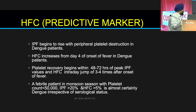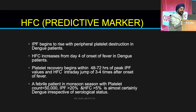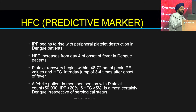A febrile patient in the monsoon season with a platelet count less than 50,000, IPF more than 20%, and HFC more than 5% is almost certainly dengue — even irrespective of serological status. This is important because there is a serological blind window: NS1 is 95% positive only for the first 4 days, sensitivity drops to 65% on day 5 and 35% on day 6, while antibodies sometimes take until day 7 to appear. On day 5 or 6, both antigen and antibody can be negative yet the patient still has dengue. This algorithm is a giveaway — we ask the patient to repeat the antibody test after 48 hours, and it invariably becomes positive.